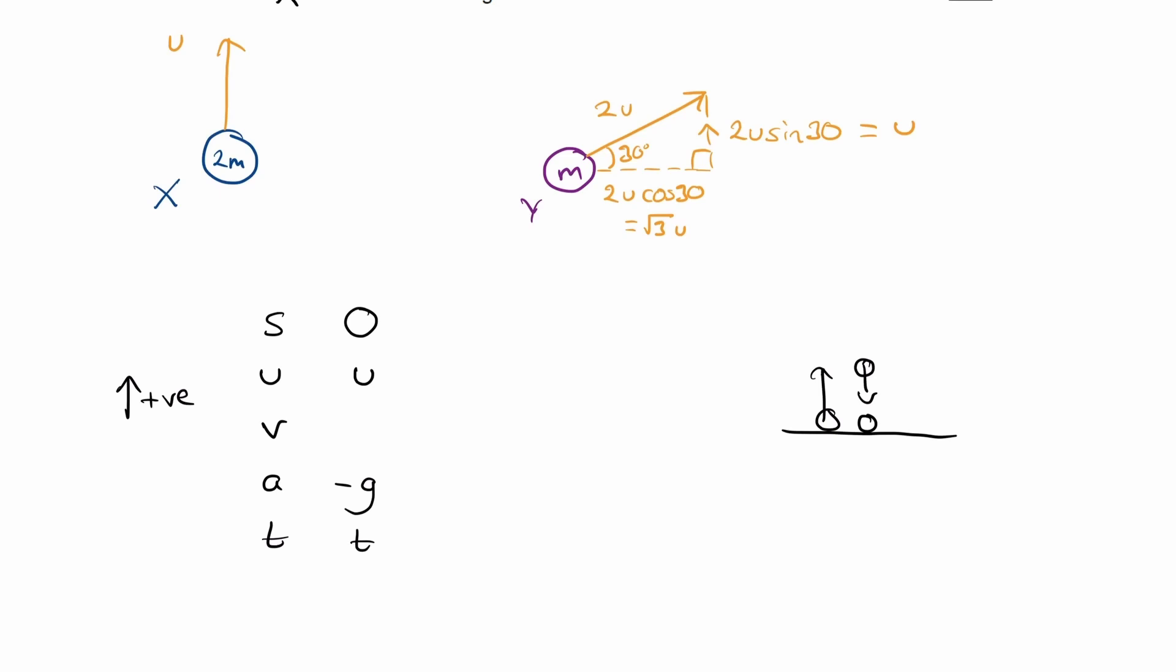So the equations that link these things together is s equals ut plus half a t squared. So then s is zero. So I will factorize out the t as well. U is just u. And then we have the a which becomes minus g. So I'm actually going to change this plus into a minus. So it becomes minus a half g t. I'll just factorize out the t and change the acceleration to minus g.